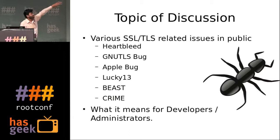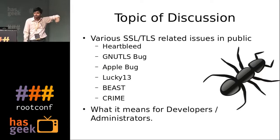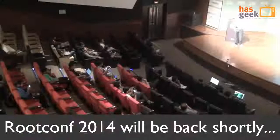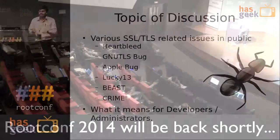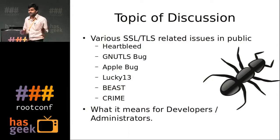What these bugs mean for a developer and what they mean for an administrator — that's what I wanted to convey. We'll start with a basic idea about what these bugs are, cover Heartbleed in detail because that's the recent one, cover some demos, and there's a hands-on. If someone has a laptop with Python installed — that's the only requirement — you can actually try it out live. We have a server setup where you can see Heartbleed in action.